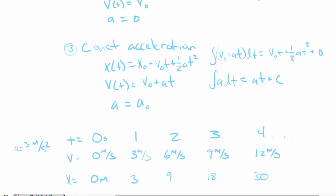If acceleration is 0, the ½at² term goes away and we're left with x = x₀ + v₀t, which is the same as the constant velocity equation. So this equation for constant acceleration can be applied to our other cases of motion as well. If acceleration is 0, velocity is constant. These two equations are quite useful and apply to any motion as long as acceleration is constant — and an acceleration of 0 is a constant acceleration.